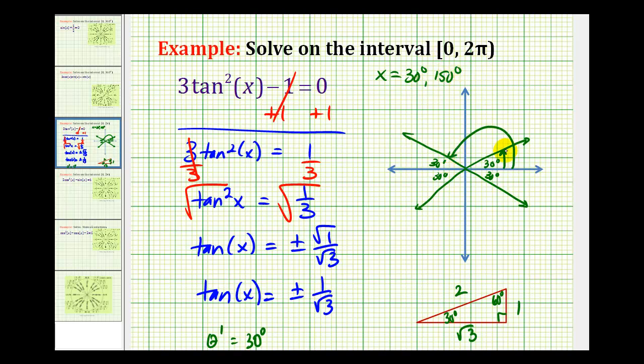Then we would have 180 plus 30, that's going to be 210 degrees, and then the last angle is going to be 30 degrees shy of 360, or 330 degrees.